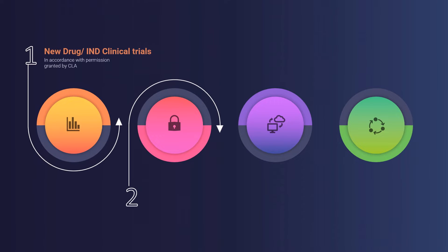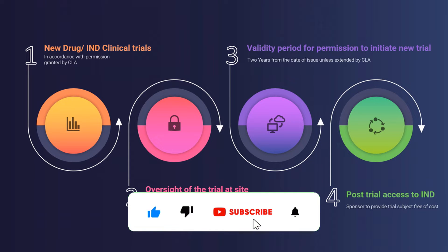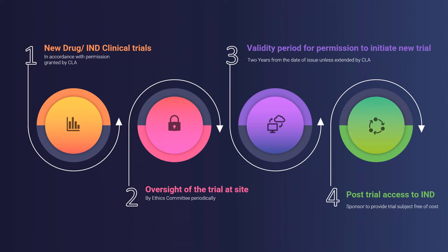Now we are going to see the four major highlights of the NDCT Rules 2019. First, there is a specific provision for the new drug or the investigational new drug for which the clinical trials will be conducted, and that has to be through a proper channel granted by the central licensing authority, that is CDSCO. Next, the oversight of the clinical trial at the site level is defined as the responsibility of the ethics committee, which has to do this oversight periodically. Next, the validity of the permission to conduct a clinical trial shall be two years from the issue date of the permission, and it can only be extended by the central licensing authority. Finally, once the trial is completed, the post-trial access of the investigational new drug — the sponsor has to provide the subject medication free of cost, as before it was very difficult for the subject to procure that particular medication and maintain their good health.